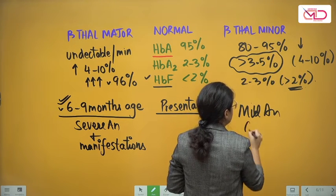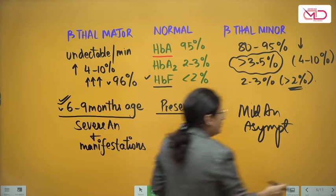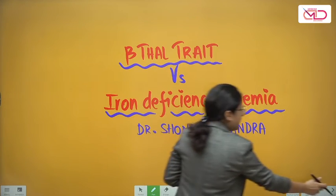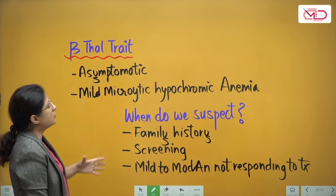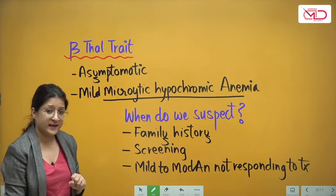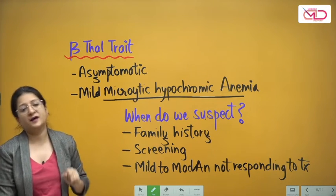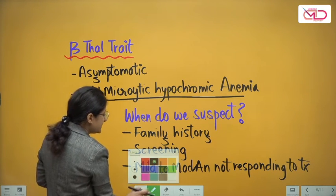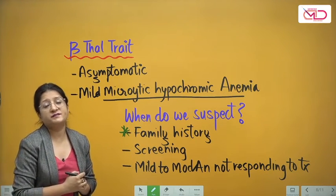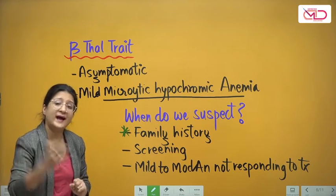Beta thal minor patients don't have the classical presentation of beta thal major. Now, how do we differentiate thal trait from iron deficiency anemia? Thal trait also shows microcytic hypochromic anemia. When do we suspect a patient could have beta thal trait? You suspect based on family history — a sibling affected with beta thal major, a parent with beta thal major, or a parent who is a known carrier of beta thalassemia.